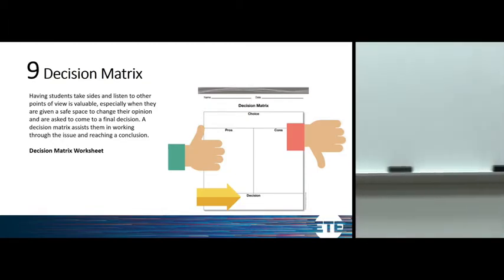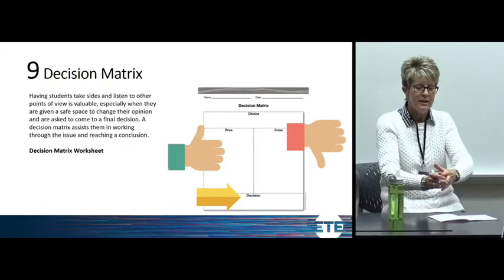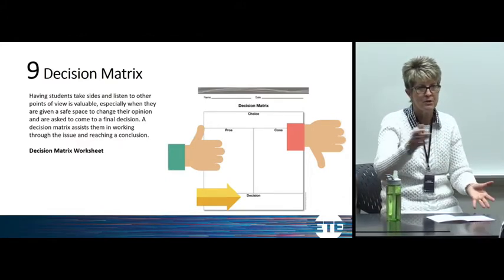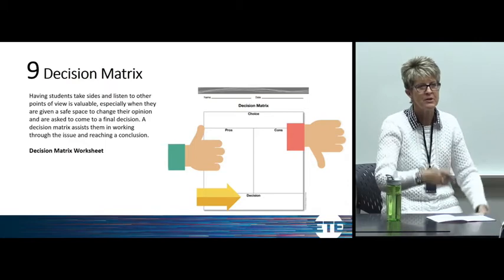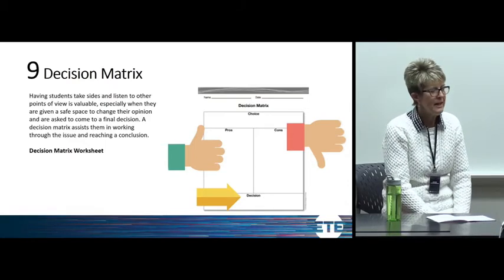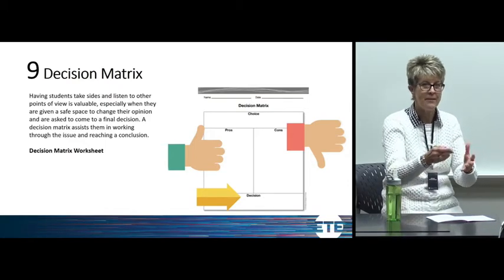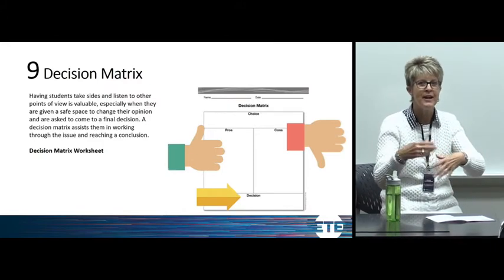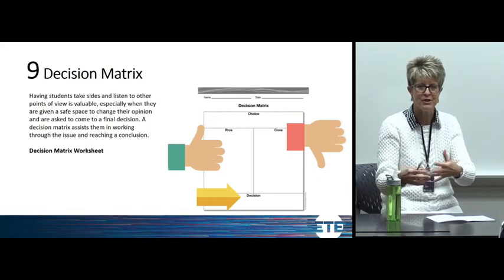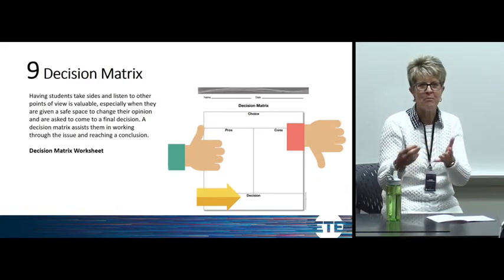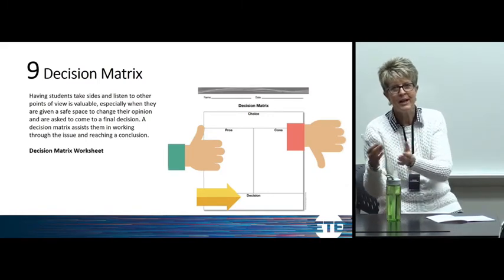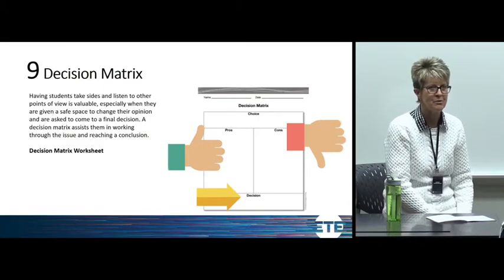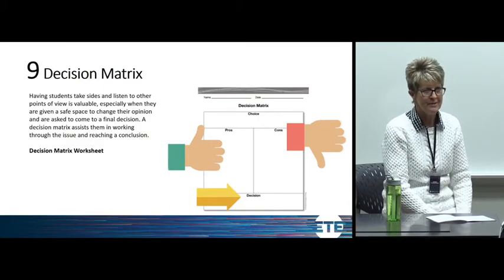I use this with my food literacy class. I put students in different groups, and each group read a different article on the new SNAP proposal — those of you who are NDFS food folks know the changes happening to SNAP. They read those articles, filled out the decision matrix on their own, then we had a class discussion, small group discussions, and they had to make a decision: should the SNAP program be changed as proposed by the new administration? It was a pretty interesting exercise in terms of what students were able to gain from that.